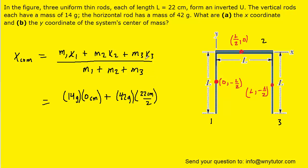And then for the third rod, we know its mass was 14 grams, and then the x coordinate of its center of mass was just l, so 22 centimeters. We can plug that in. And then on the bottom, we'll just sum all the masses together. And when you crunch all this down, you should get approximately, in fact exactly, 11 centimeters. So this would be the correct answer to part a.